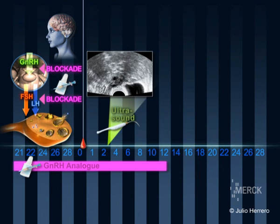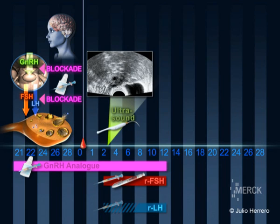If everything is normal, subcutaneous daily injections of FSH are initiated. This hormone facilitates the growth of the follicles in the ovary. The dosage is established for each patient and is adjusted in consecutive checks. The objective is to have 4 to 7 follicles grow per ovary.